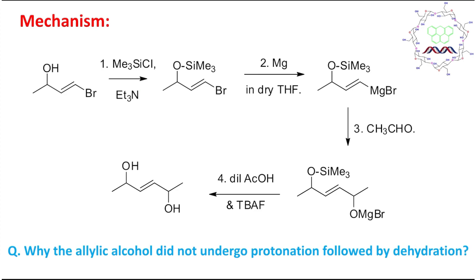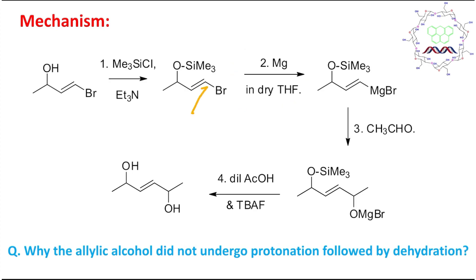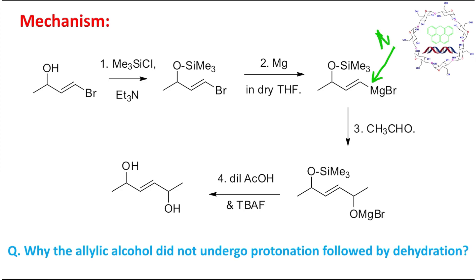In the second step, metallic magnesium is provided in dry THF. There is a vinyl carbon-bromine bond, so it will undergo reaction with the metallic magnesium to produce the Grignard reagent — vinyl magnesium bromide. This Grignard reagent is nucleophilic in nature because it bears a carbanion character, and it can react with electrophiles.